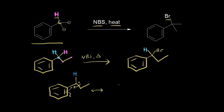For the resonance structure, I can draw the ring with the pi bonds repositioned, a double bond between these two carbons, the hydrogen still attached, and then an electron out on the ortho carbon of the ring. The benzylic radical is resonance stabilized. If you formed a radical at the other carbons on the alkyl group, those are not resonance stabilized because they're not directly adjacent to the ring. That's why the reaction occurs only at the benzylic position — because of resonance stabilization of the benzylic radical.